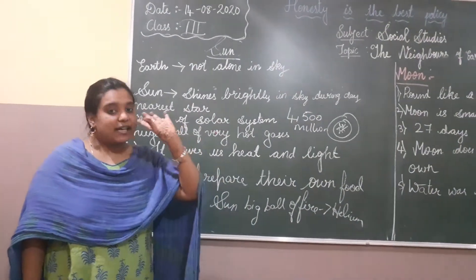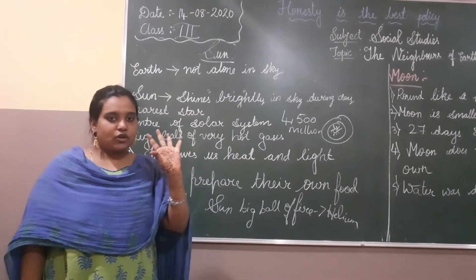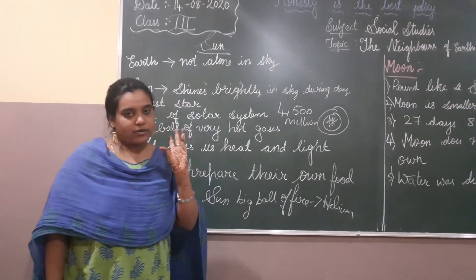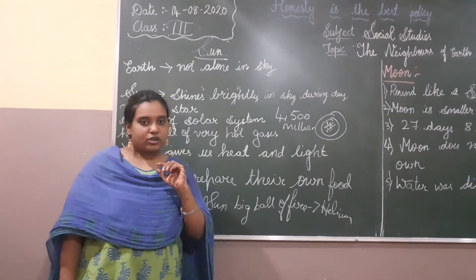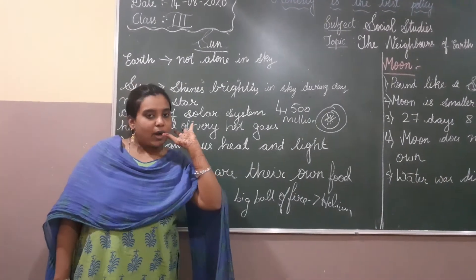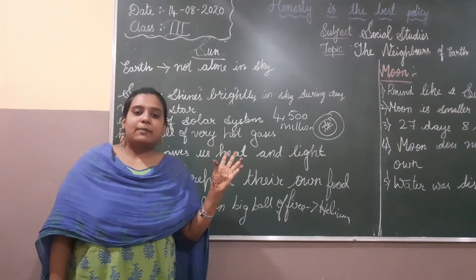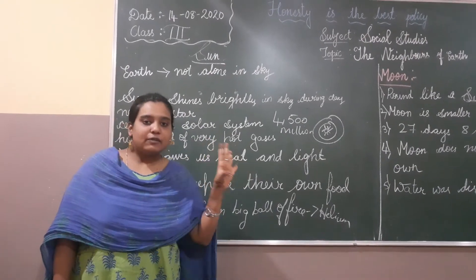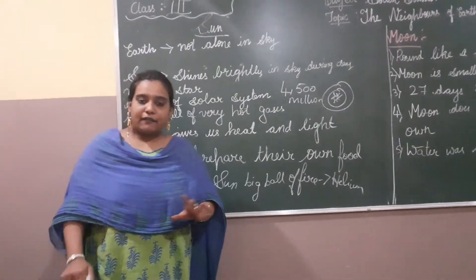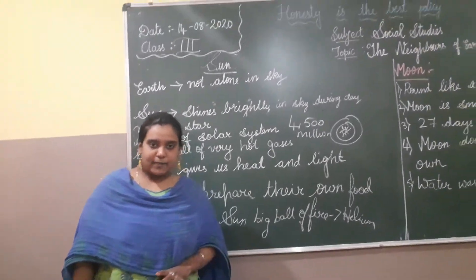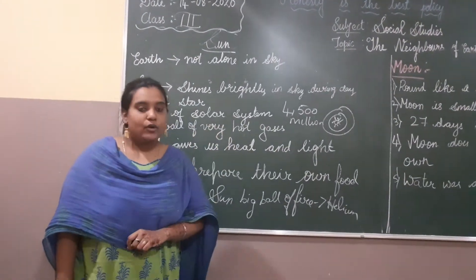Once the earth changes direction, it revolves around the sun — it has its own revolution and rotation. When the part of the earth facing the sun turns away, it becomes dark. At night time, we have another source of light — the moon.